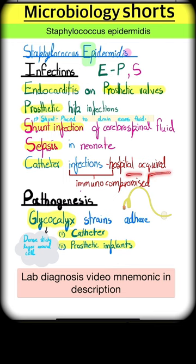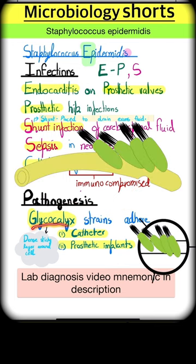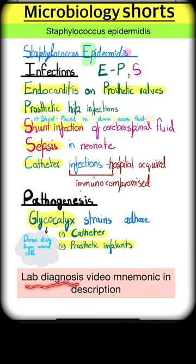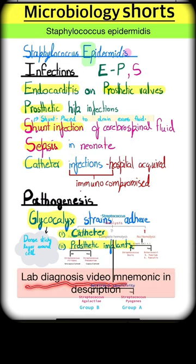This organism primarily affects immunocompromised patients and causes hospital-acquired infections. Pathogenesis is due to glycocalyx-producing strains that adhere to catheters and prosthetic implants. Glycocalyx is a dense, sticky layer around the cell that allows it to adhere to foreign objects.